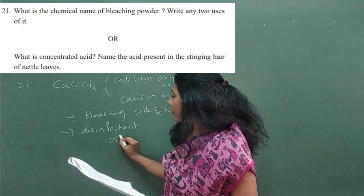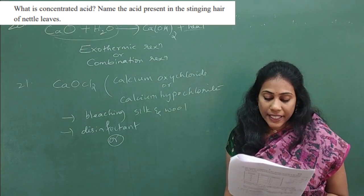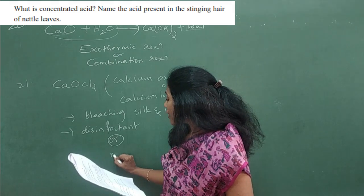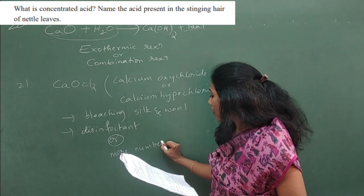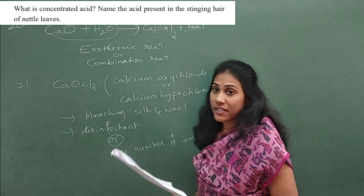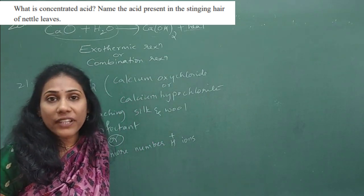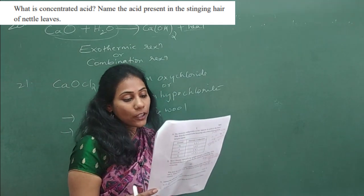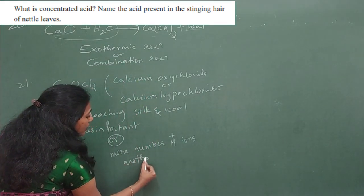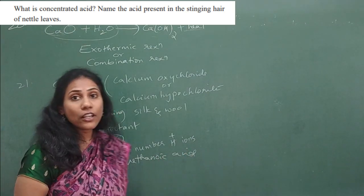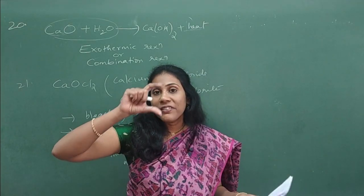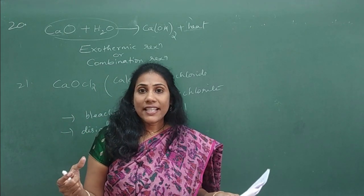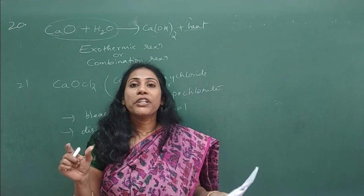The OR question for 21: 'What is a concentrated acid? Name the acid present in the stinging hair of nettle leaves.' A concentrated acid is one which has more number of H+ ions. Any acid with more H+ ions is called a concentrated acid. The acid present in the stinging hair of nettle leaves is methanoic acid. In the NCERT textbook, there is a table listing which acid is present in which source — like oxalic acid in tomato, tartaric acid in tamarind — that table is very important.